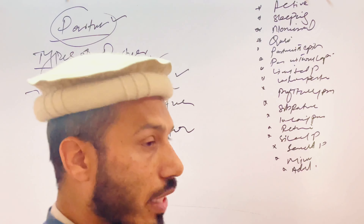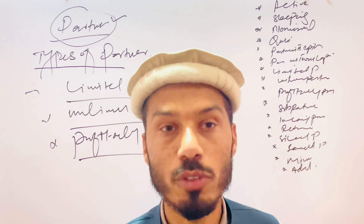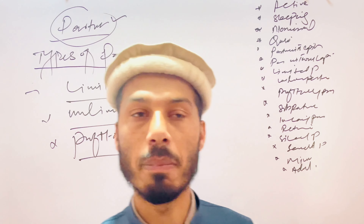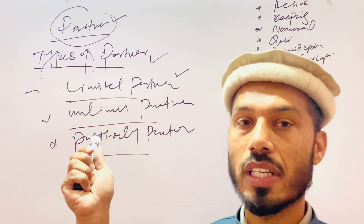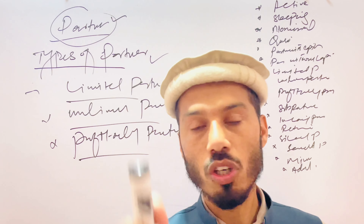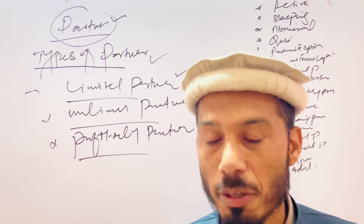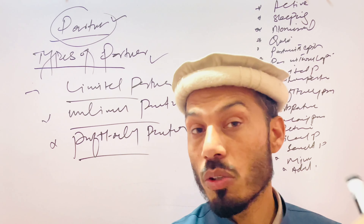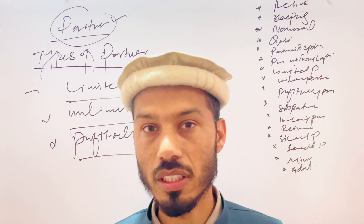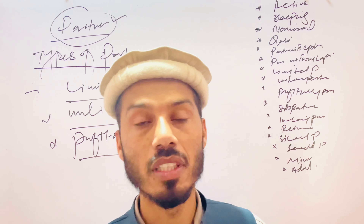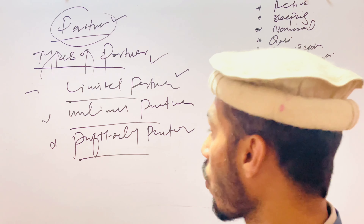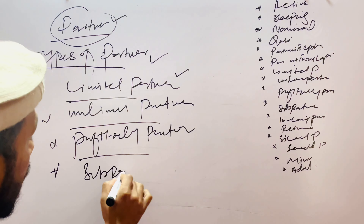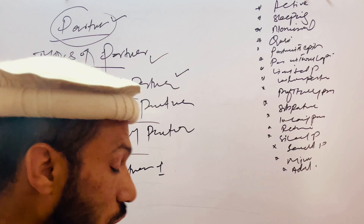The next type is the profit only partner. Profit only partners are those who are involved only in sharing the profit of the business and are not concerned with the loss of the business. This type of partner is called a profit only partner.